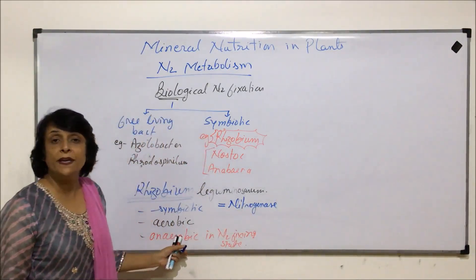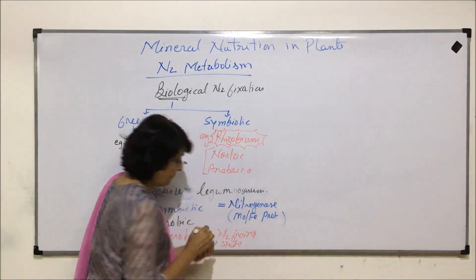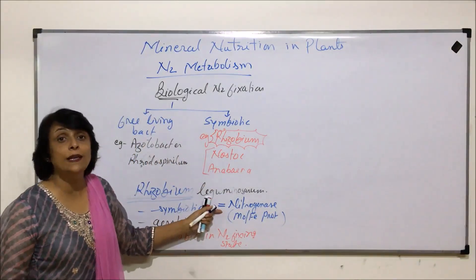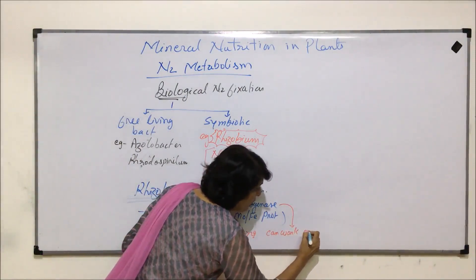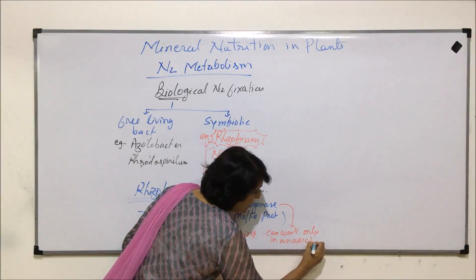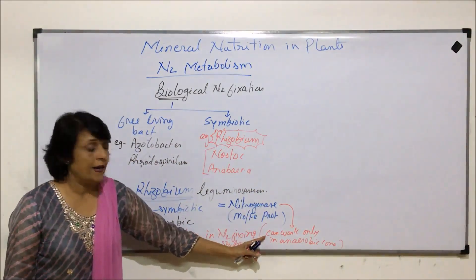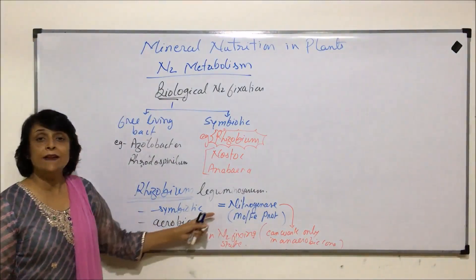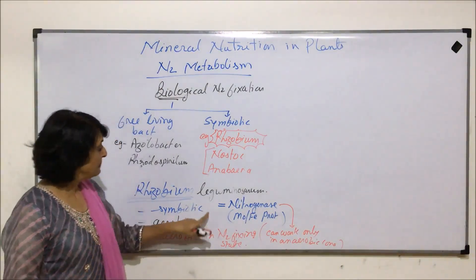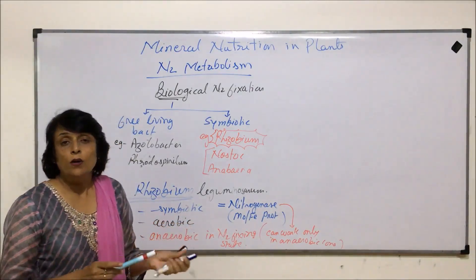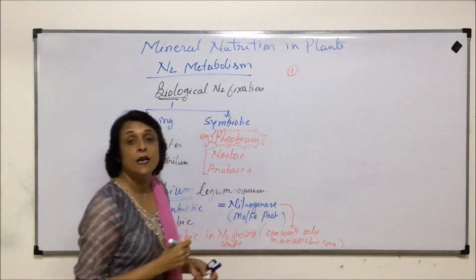Nitrogenase is the enzyme that helps in nitrogen fixation. It is a molybdenum-iron containing protein, and it can work only in anaerobic conditions. That is why Rhizobium acts as an anaerobic bacterium when it has to help in nitrogen fixation — because nitrogenase can work only in anaerobic conditions. Now we will look at the various steps of how this symbiotic nitrogen fixation takes place, starting with nodule formation.